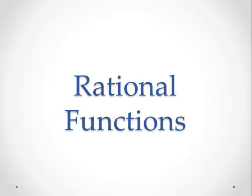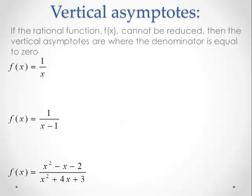For this section we're going to look at graphing rational functions, identifying vertical asymptotes. We have three examples of rational functions — they're rational functions because they have a numerator and a denominator. When we're looking for vertical asymptotes, we first want to make sure that the fraction doesn't simplify at all, and in each of the three cases here they can't be simplified.